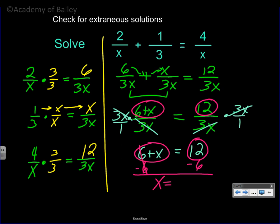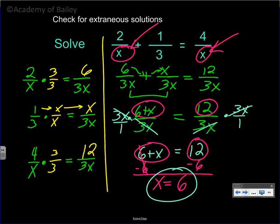Check for extraneous solutions. Can x equal 6 up at the top? Yes, because 6 is not 0, and the bottom of the fraction would not be 0. So there's your answer: x is equal to 6.